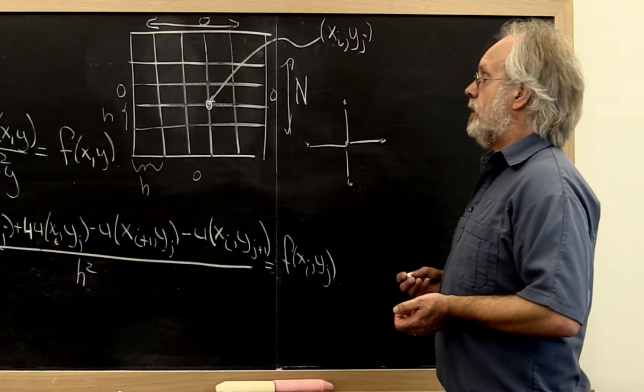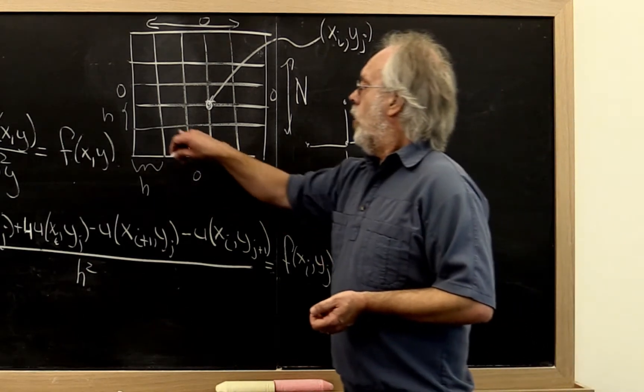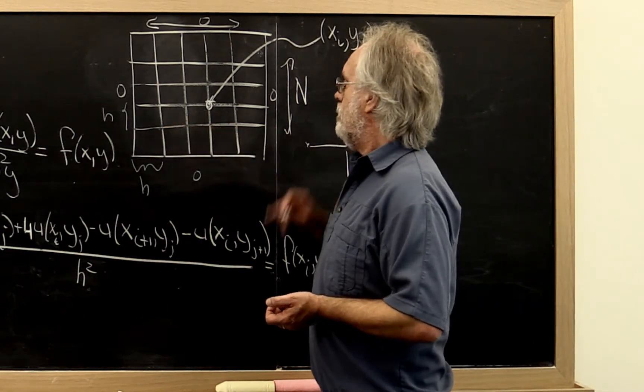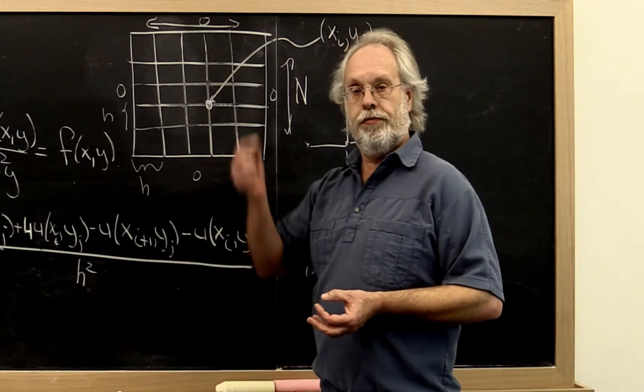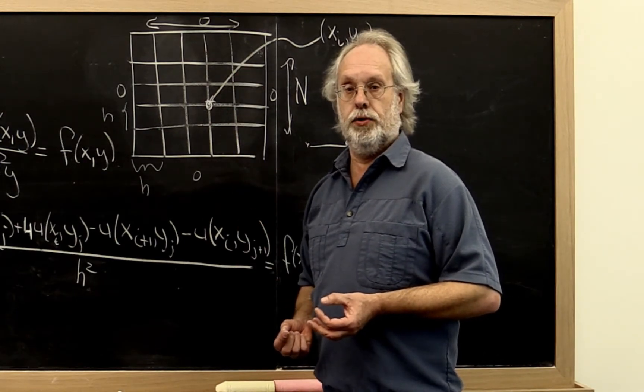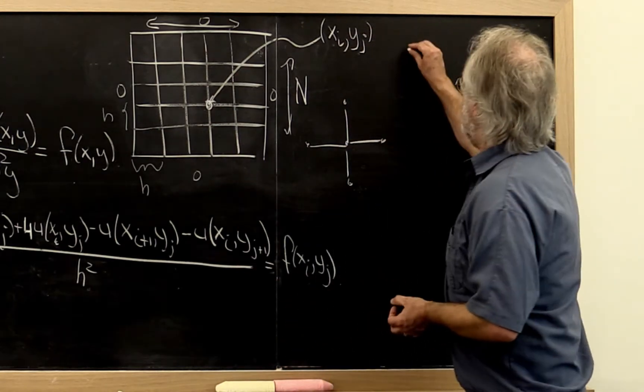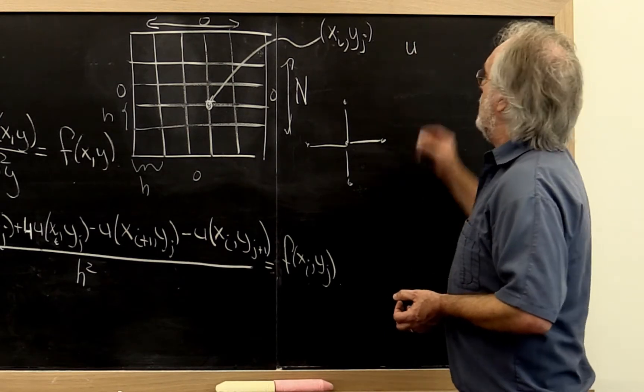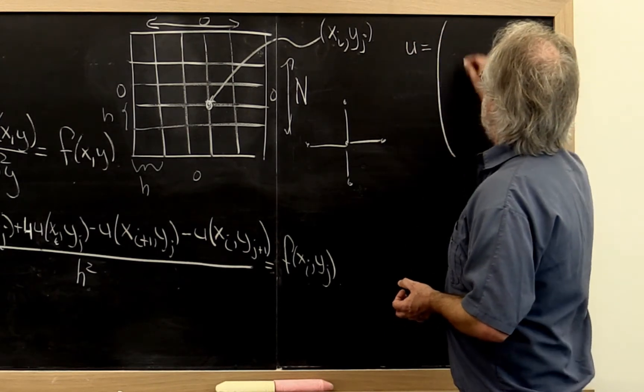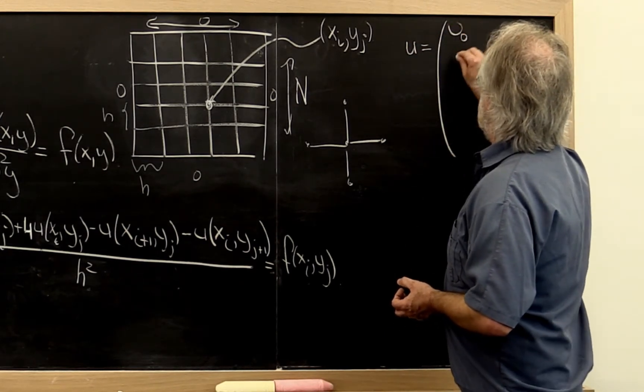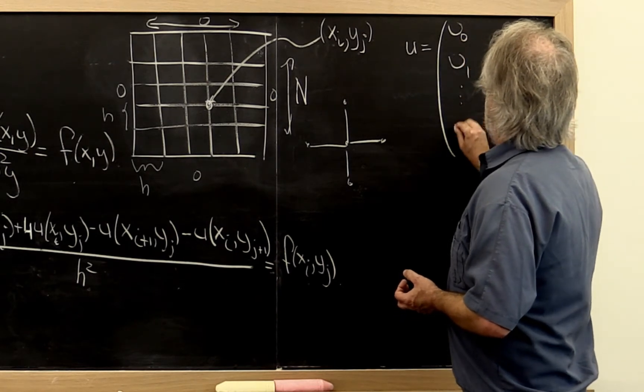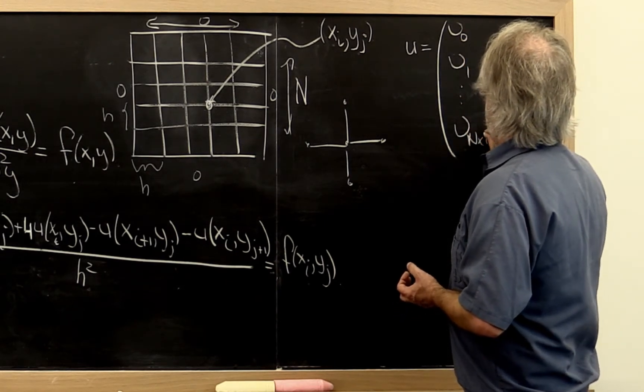Now the next thing that they then typically do is say, well, all of these values that we're trying to compute really are part of a vector of values we're trying to compute. So let's call that vector u. Let's call the entries in that vector u epsilon 0, epsilon 1 through epsilon n by n minus 1.